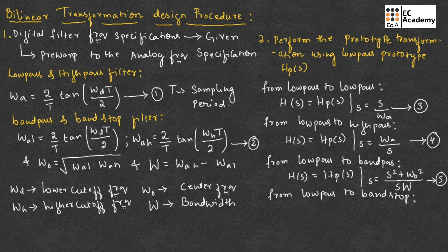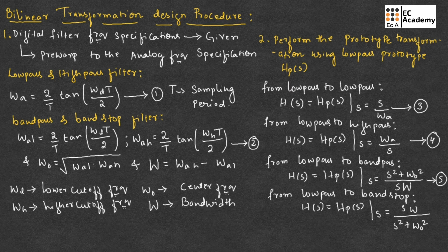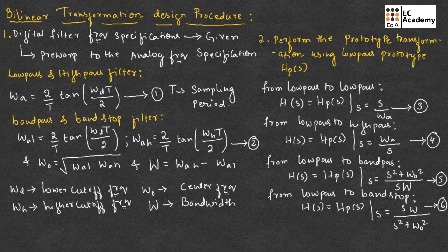For low pass to band stop, we can use the transformation H(s) = H_P(s), where s should be replaced with s·W divided by (s² + omega_0²). Let us call this as equation number 6. These are the different transformations which we need to use depending upon the problem given. If they ask to transform from low pass to low pass, use equation number 3; low pass to band pass, use equation number 5; and so on with equations 3, 4, 5, and 6.